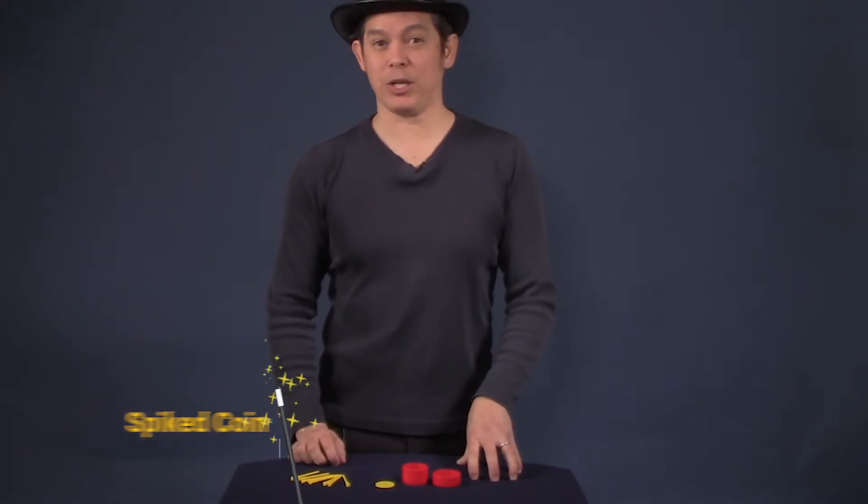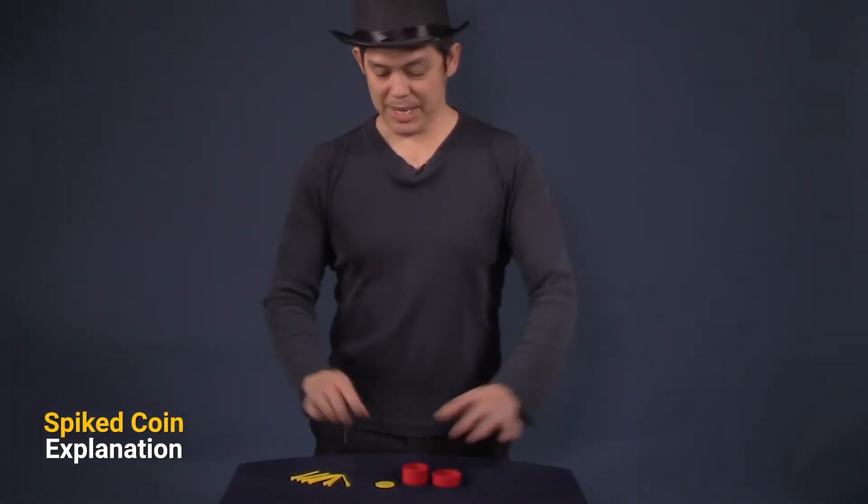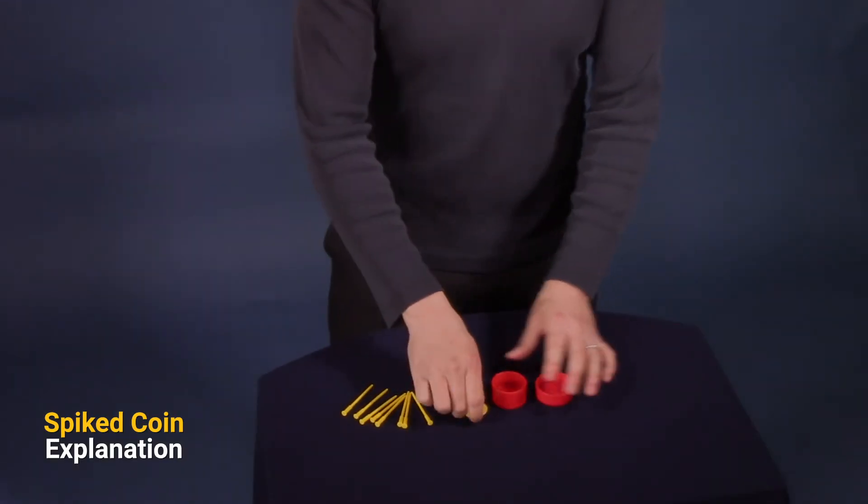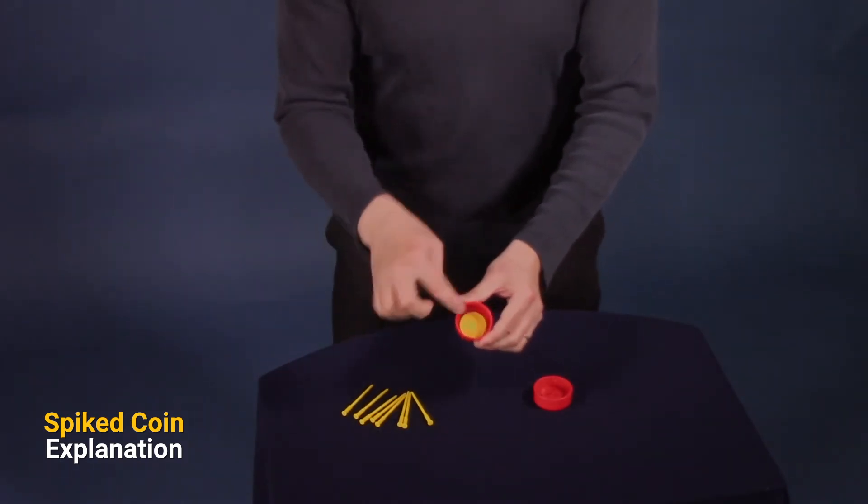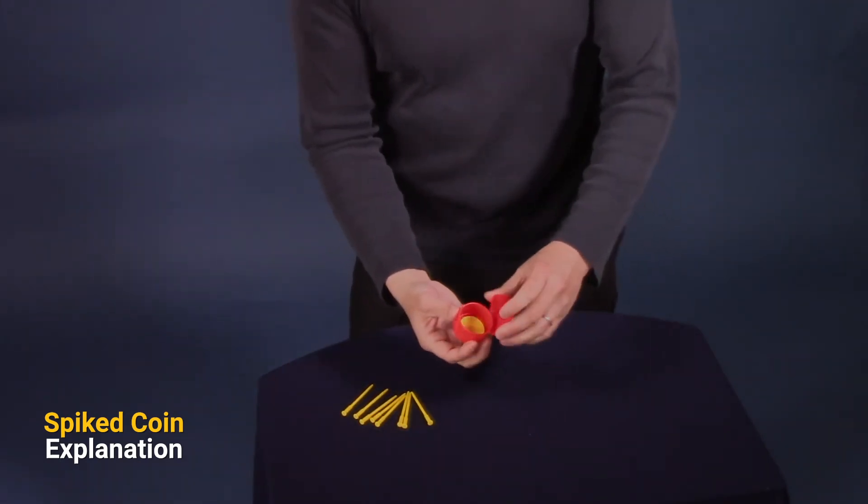This is the spiked coin trick explanation. Basically, it uses the spikes, the coin, and the box. When you put the coin in the box, that's all straightforward. And then you cover the box.